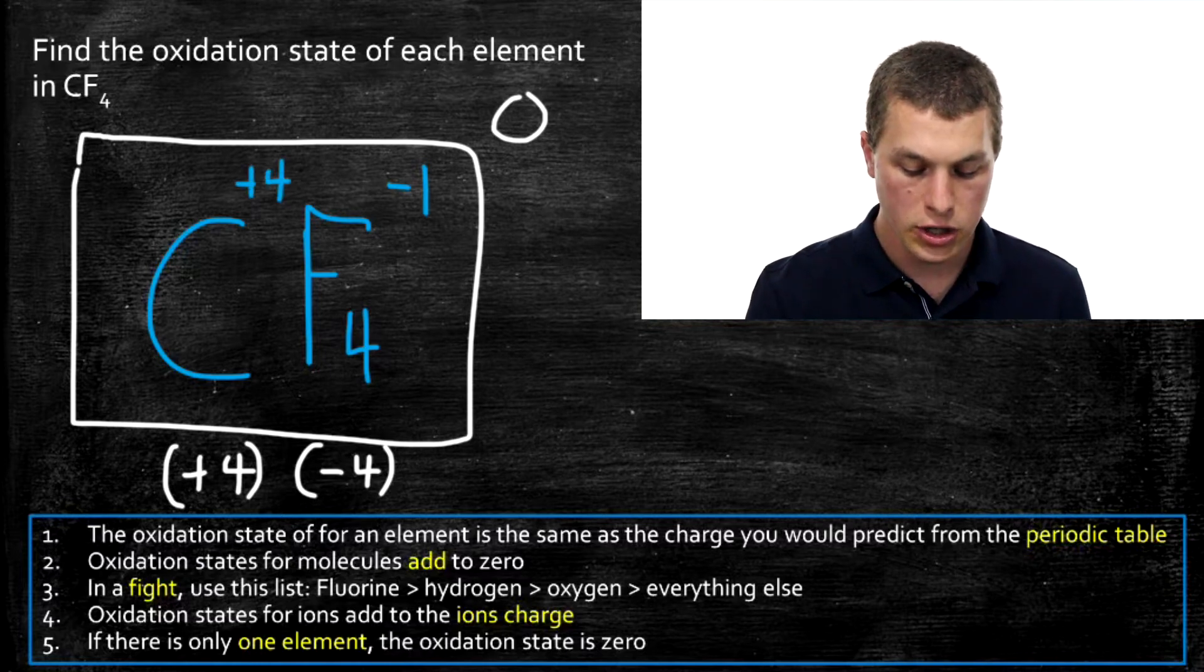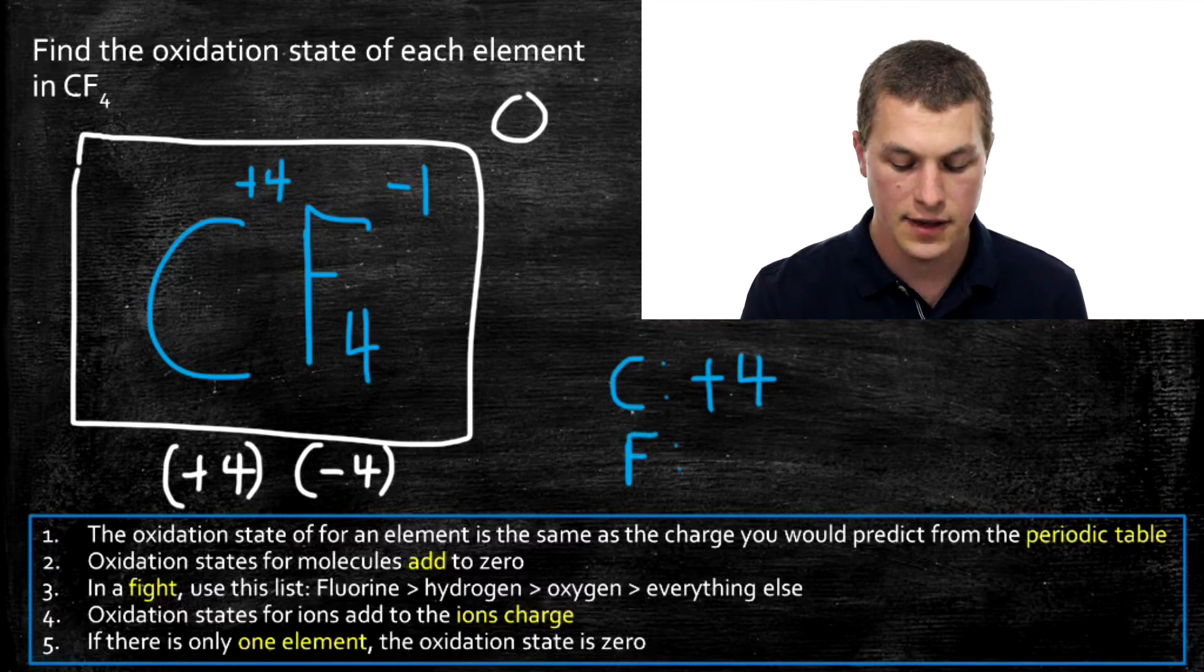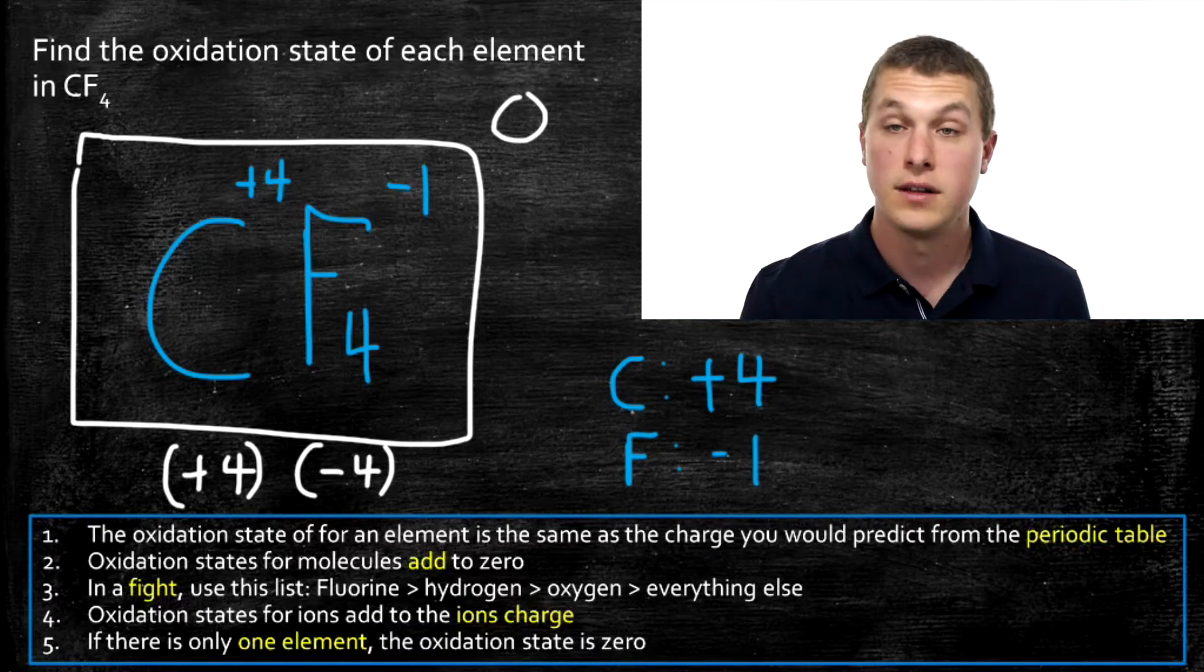So those are my answers. Carbon has an oxidation state of plus four, and fluorine has an oxidation state of minus one. Let's go ahead and do another one.